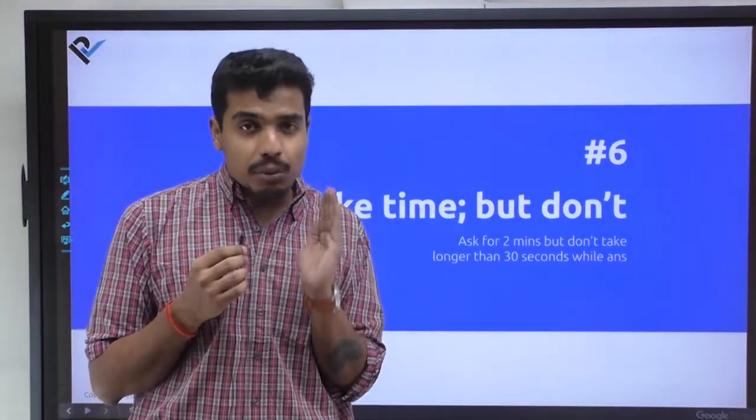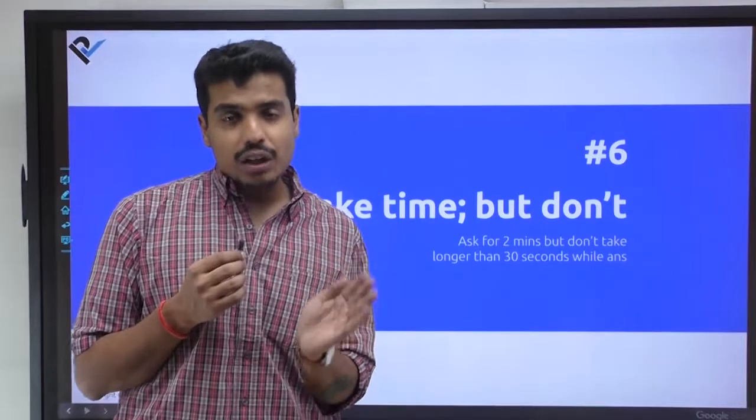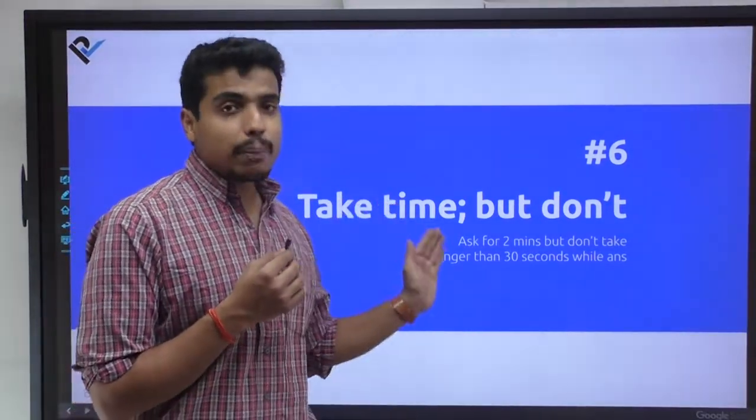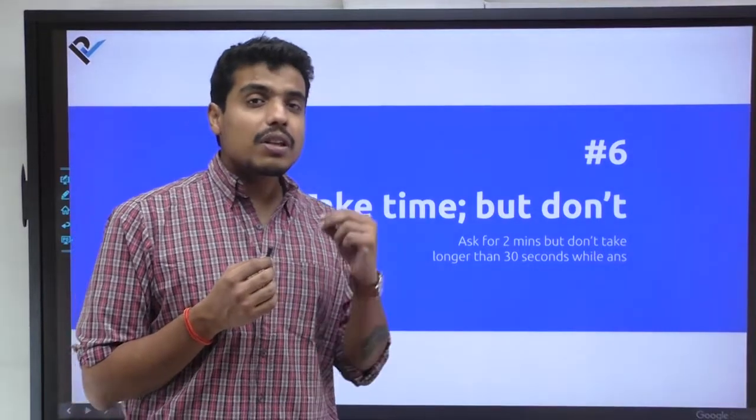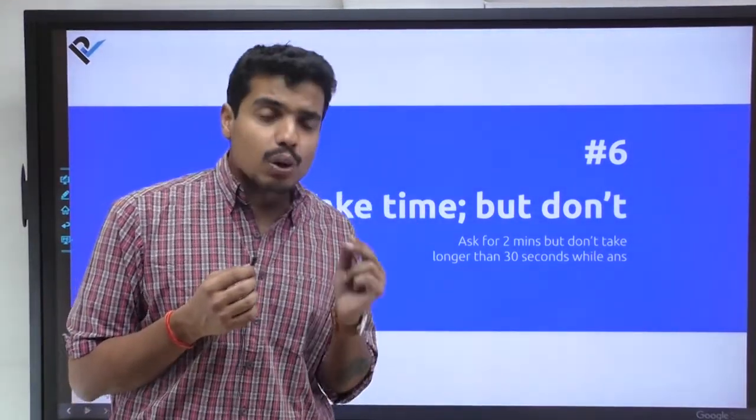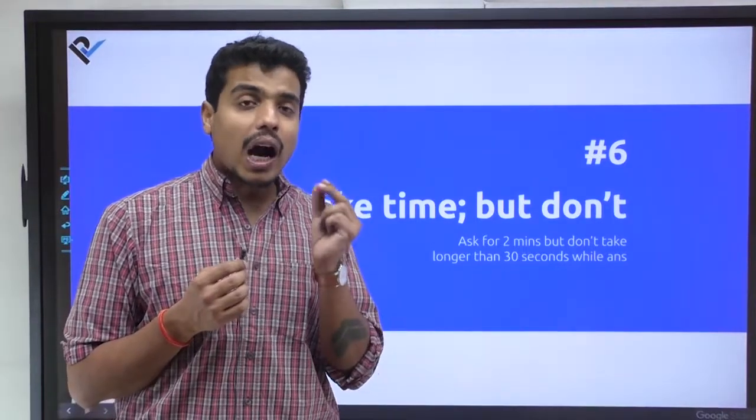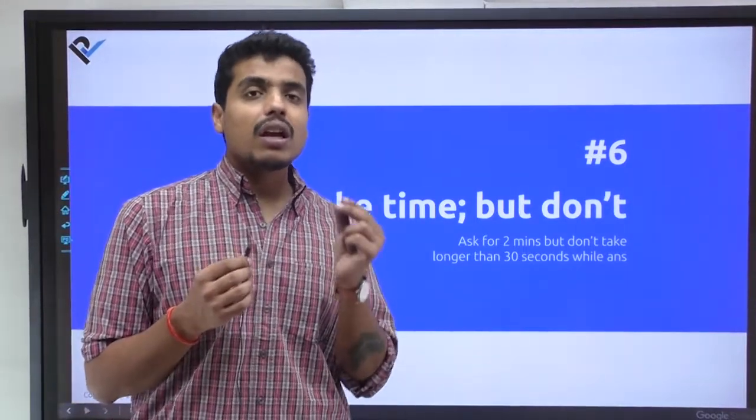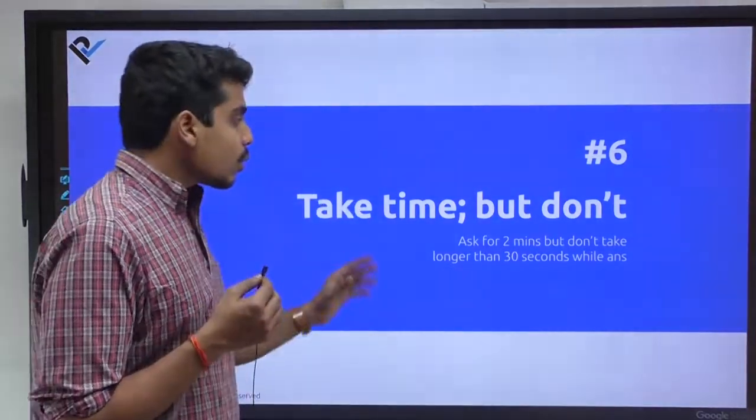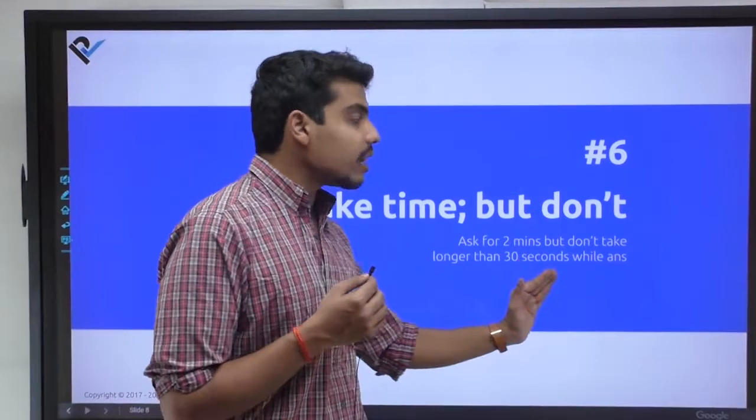Two and a half minutes of blabbering will immediately make the interviewer throw you out. When you take a pause and speak thoughtfully, it seems like the person thinks before he speaks. That's a very good quality—you articulate your messages well, your communication is effective. So ask for two minutes, but don't take longer than 30 seconds while answering.